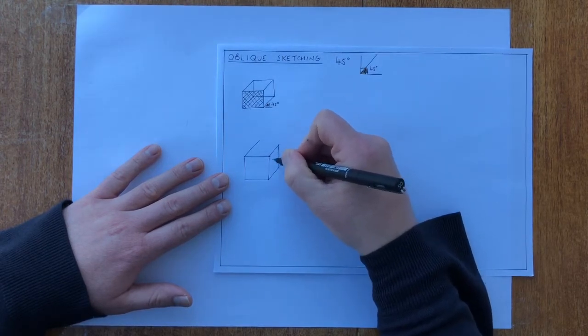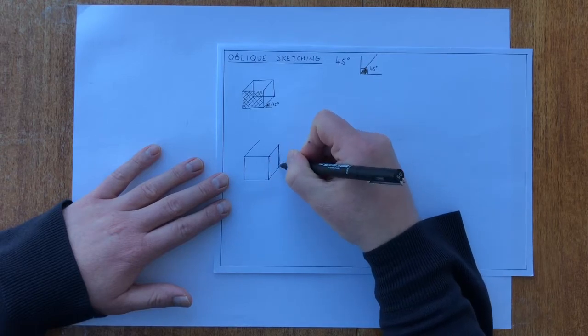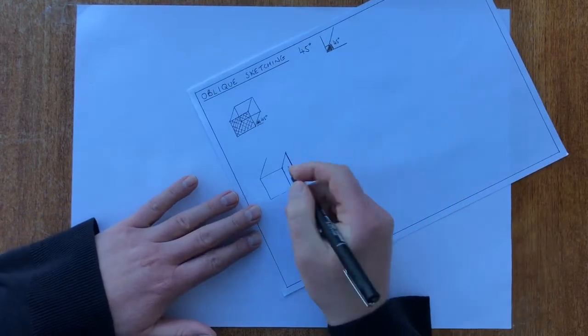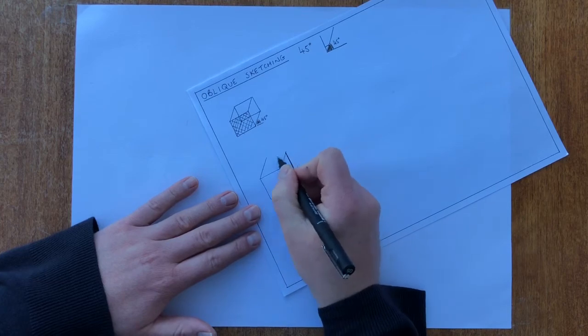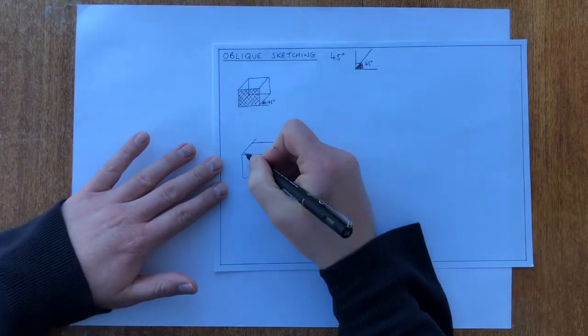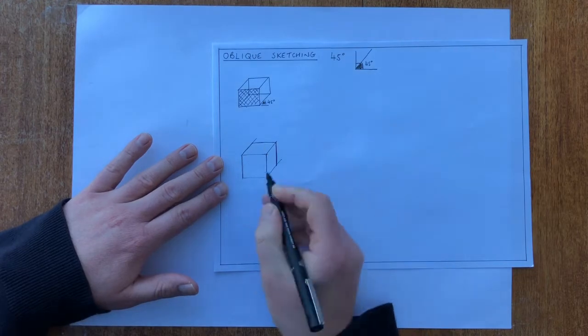And at the front we've drawn a vertical line. There's a vertical line here, so draw a vertical line at that space. At the front there's a horizontal line here, so draw a horizontal line at this space. And we have a cube drawn in oblique.